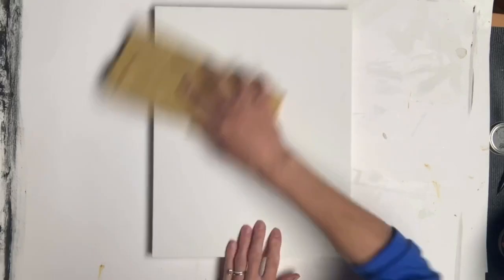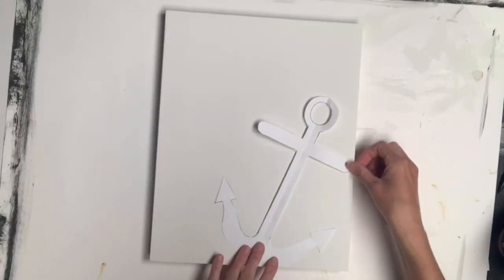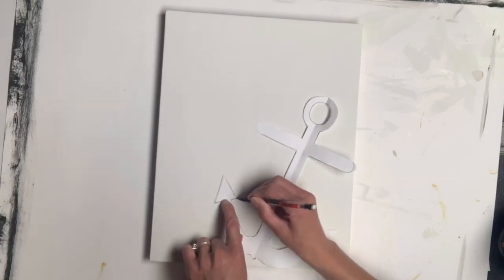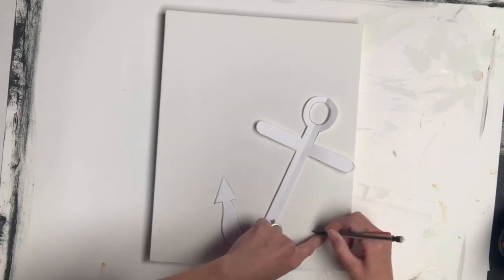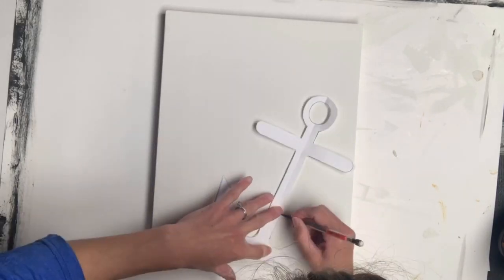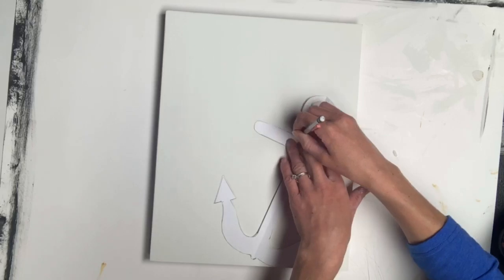I took a 220 grit sandpaper and sanded my board, and then I took my anchor cutout and traced it on an angle. I went lightly around it using a pencil.